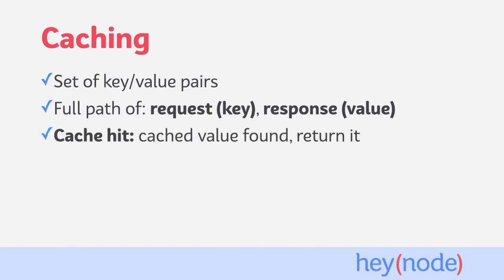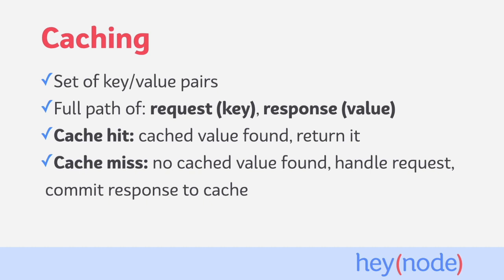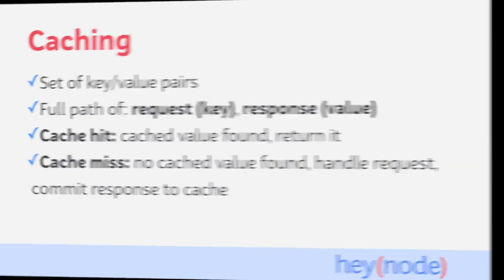When a request is received by the server, we'll check if there's a cached response associated with the key. If there is, we return the cached response to the user. When a cached value is found, that's considered a cache hit. If there isn't a cached value found, that's considered a cache miss. In this case, the request is handled as normal, and the generated response will be added to the cache.